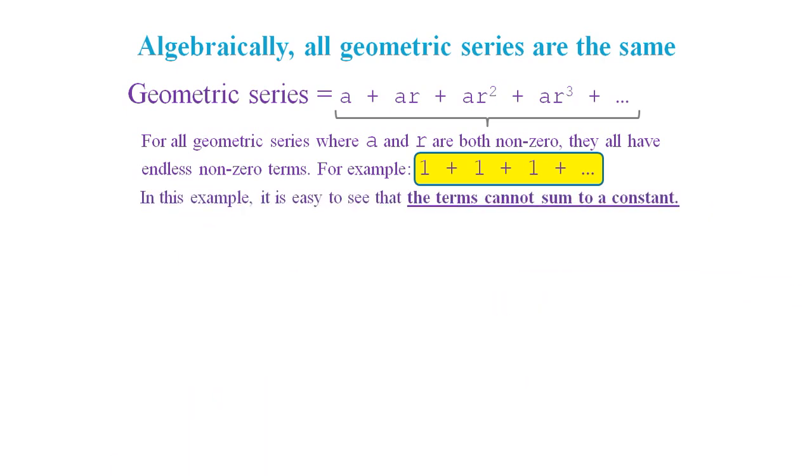In this example, it's easy to see that however many terms we account for, there will always be an endless stream of non-zero terms that we have not accounted for. We cannot sum to a constant value. And so the mathematical contradiction on the previous slide does make sense, because endless non-zero terms summing to a constant is a logical absurdity.